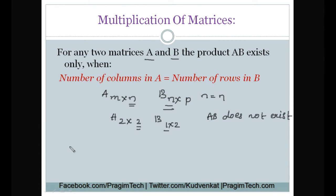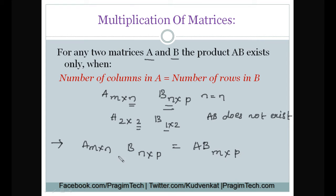One more point to remember: if matrix A is of order m by n and B is of order n by p, then the resulting matrix AB will be of order m by p. For example, if A is 2 by 2 and B is 2 by 3, then the resulting matrix AB will be 2 by 3.